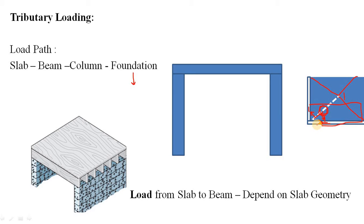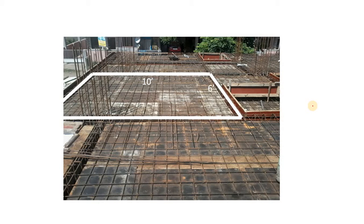What happens if the slab becomes elongated — where the length is too much compared to your width — or what happens when length equals breadth? The distribution of load is totally different based on the geometry of your slab. Based on that geometry, the load is dispersed or distributed among the beams. Your slab can be divided into two types: first is your one-way slab, and second is your two-way slab.